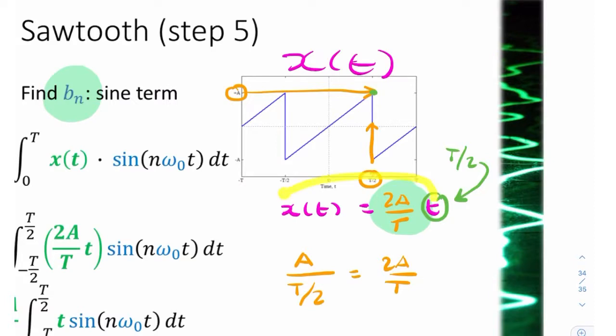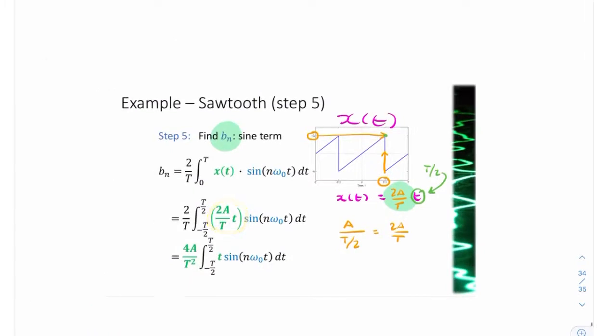That's where that comes from, and that is how we replace x(t) with the equivalent expression. 2A and T, these are all constants. They can be taken outside of the integration, and we end up with that.